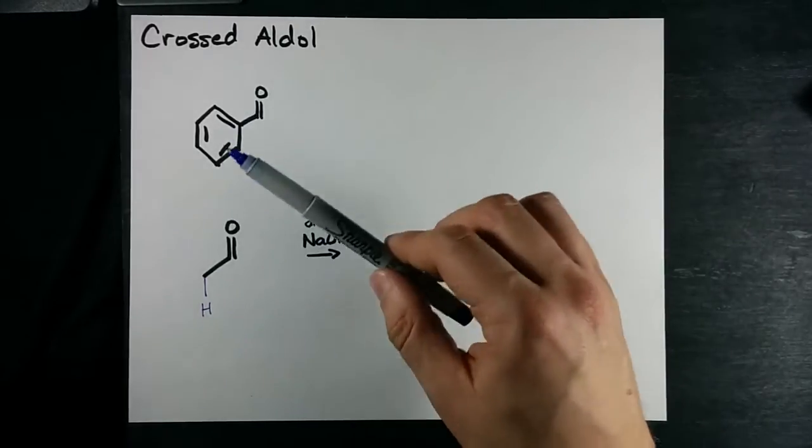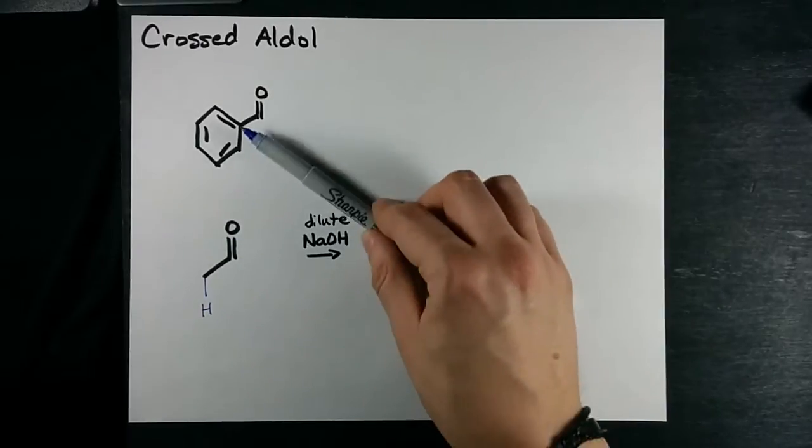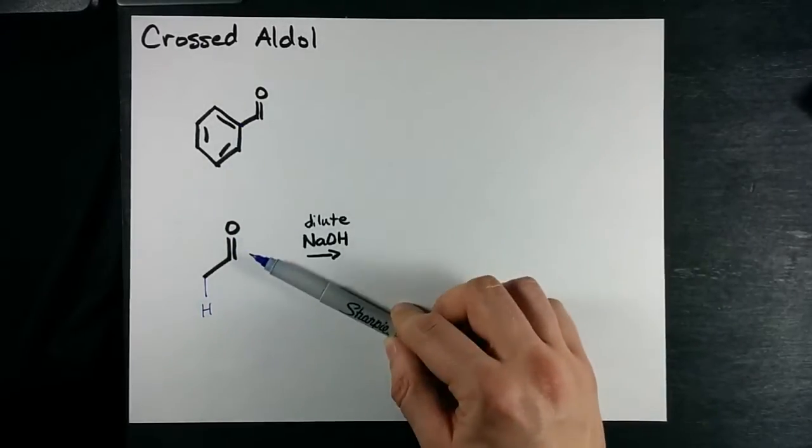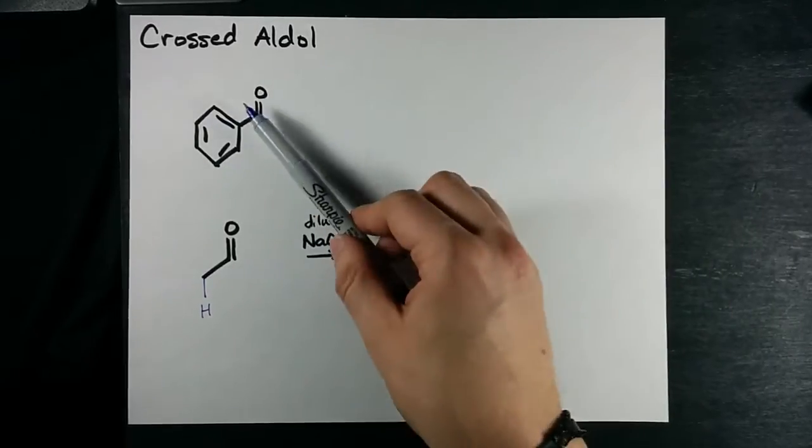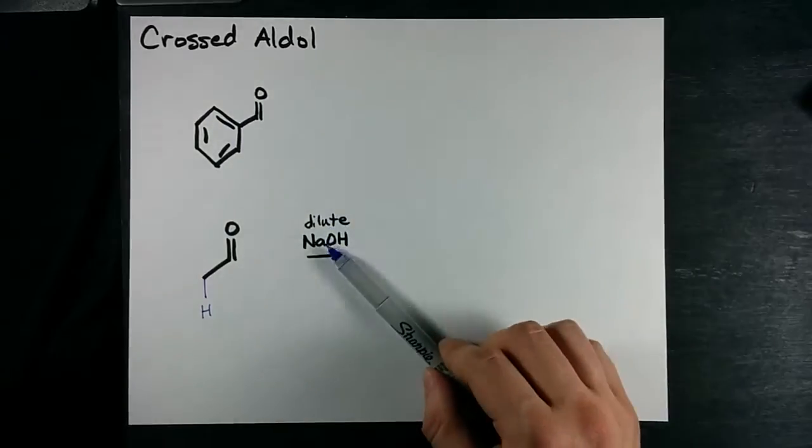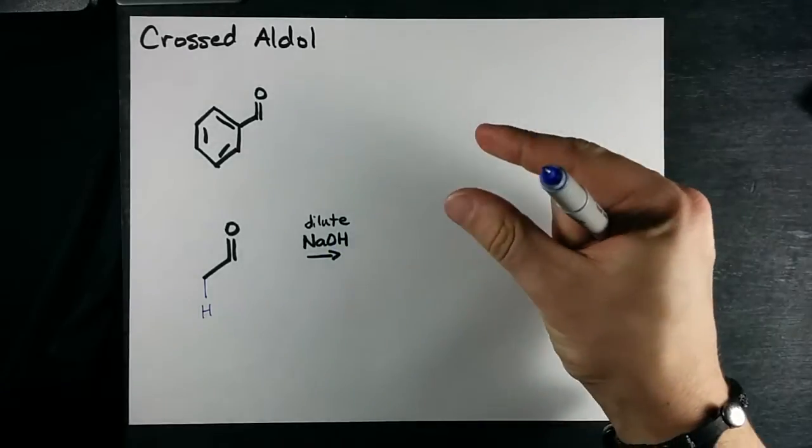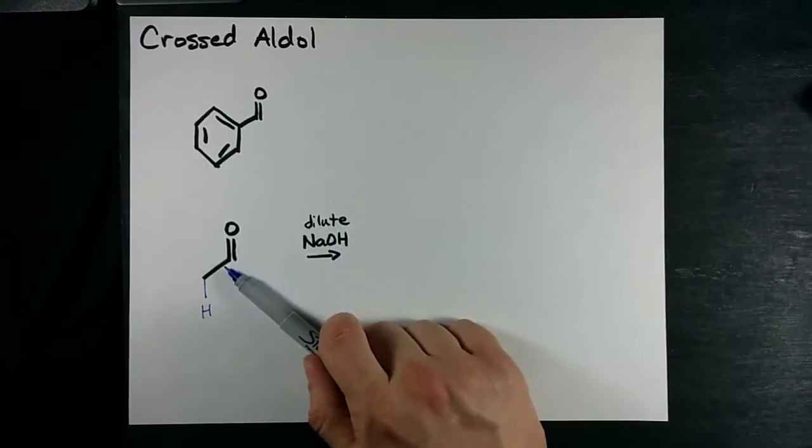So what we can do to get an aldol condensation product between these two is to simply have a beaker full of this, or a flask or whatever, of this and dilute NaOH, and dropwise we're going to add this.